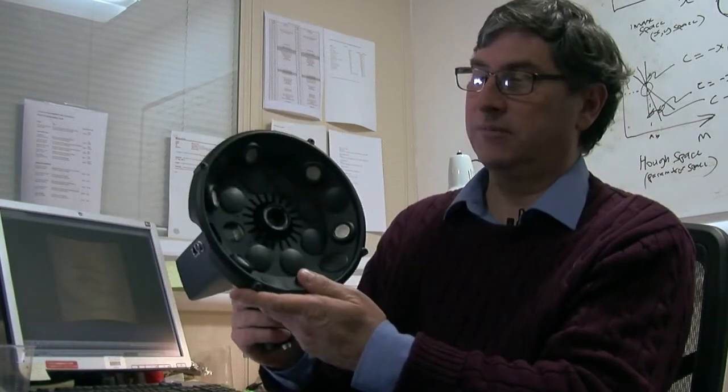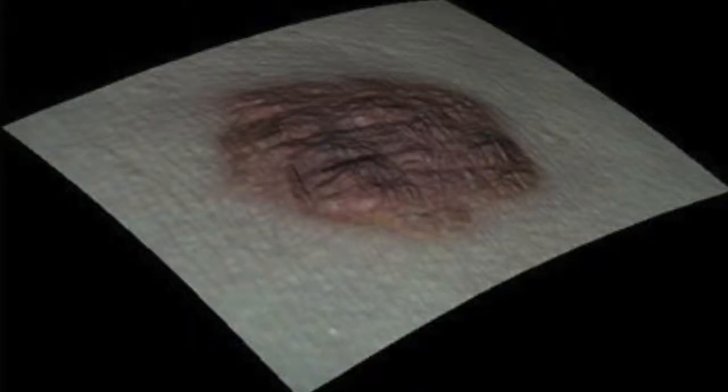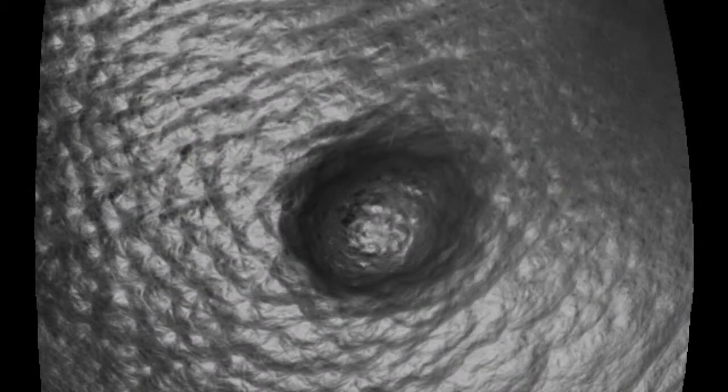One of which is in skin cancer. We developed this device which also uses photometric stereo and we've been using this for a number of years with the pigmented lesion clinic. The idea here is to look for a correlation between disruptions in the skin line pattern, the pattern of polygons that we all have on our skin, and the presence of melanoma.